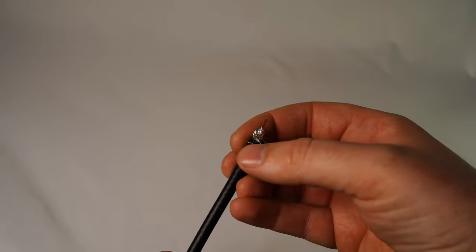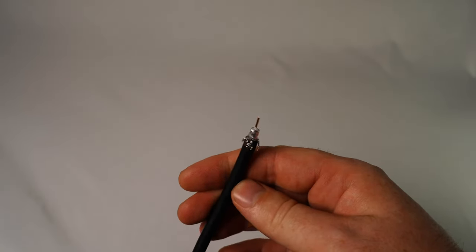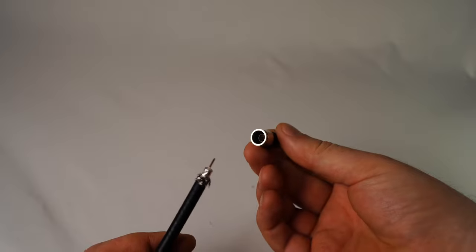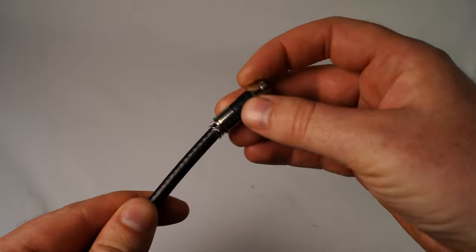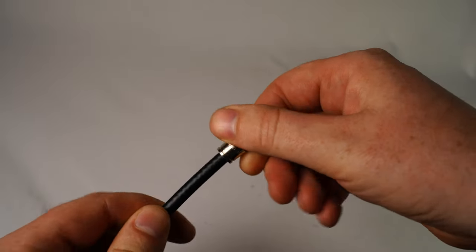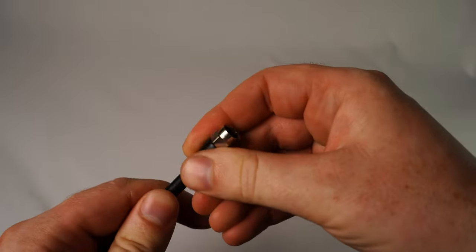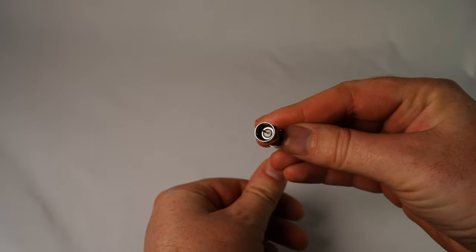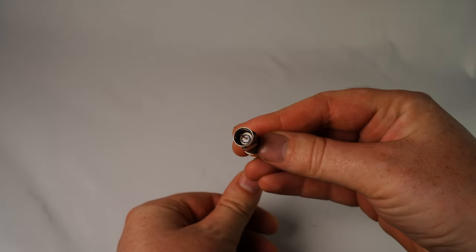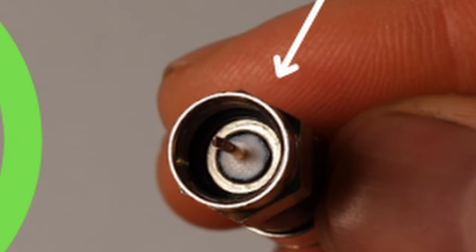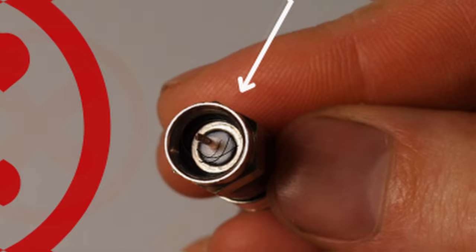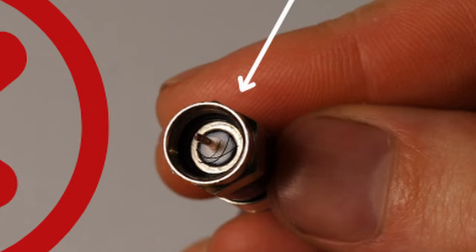Next fold back the braiding over the outer sheath. Insert the F type compression end onto the cable. The F type connectors screw thread faces away from the cable. Press by hand until the white dielectric insulating material is flush with the base of the screw thread inside the connector. Once flush check to ensure the white dielectric material is free from any broken braids or foil making contact with the inner core.